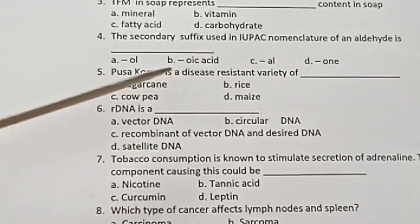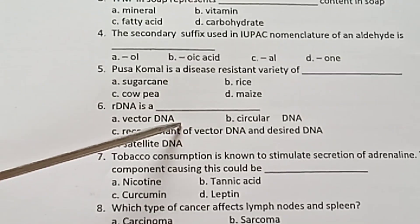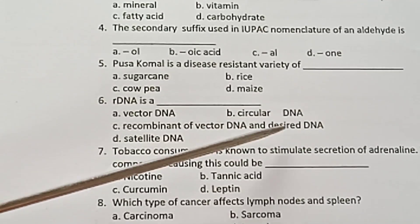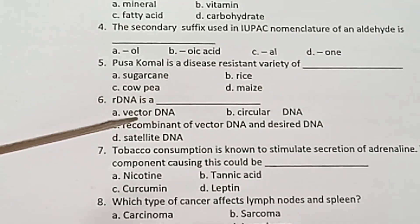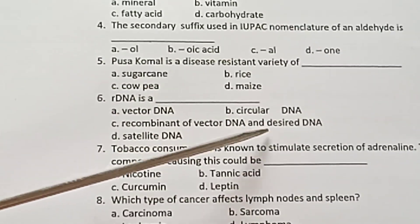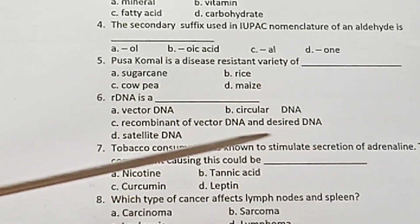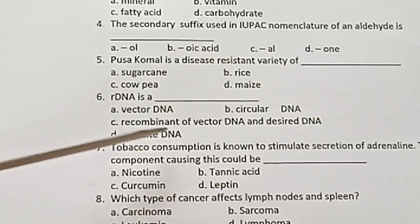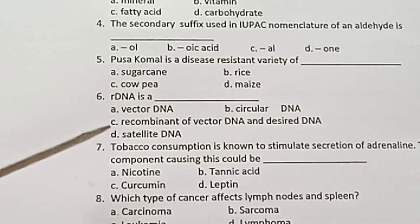Question 6: R-DNA is a — A) Vector DNA, B) Circular DNA, C) Recombinant of Vector DNA and Desired DNA, D) Satellite DNA.